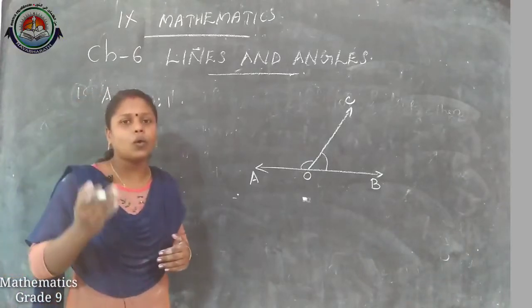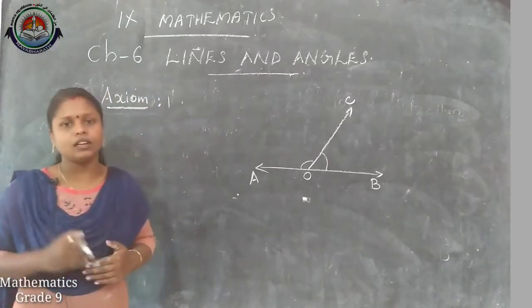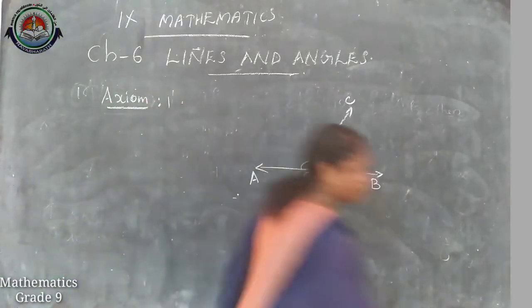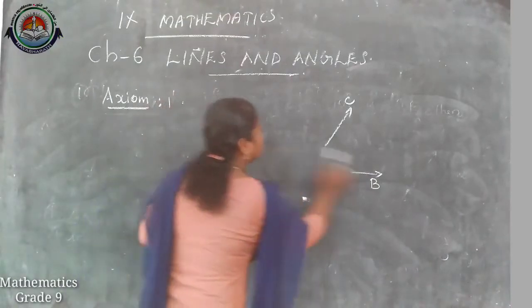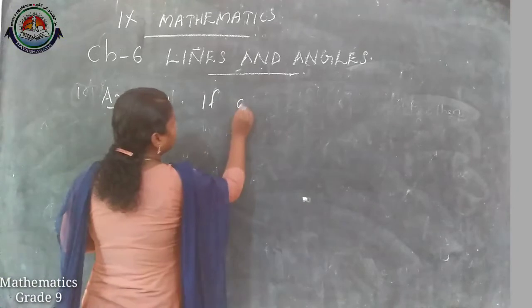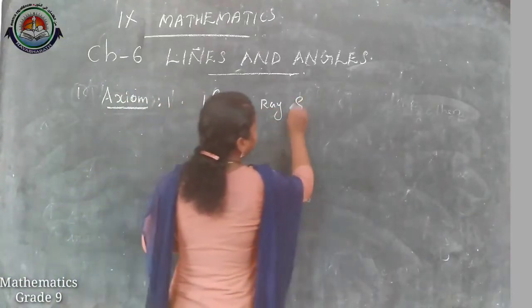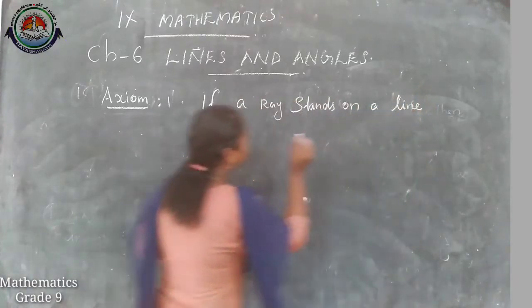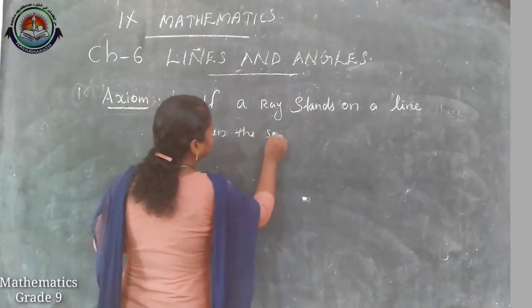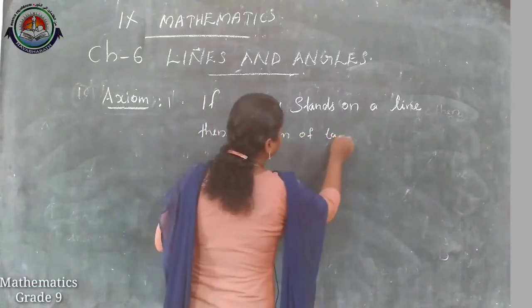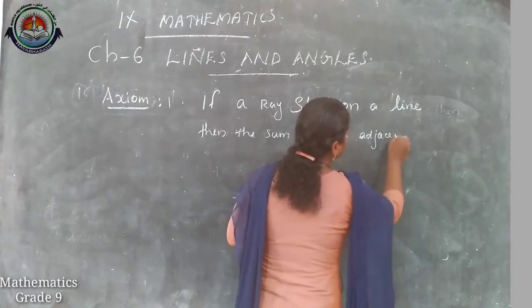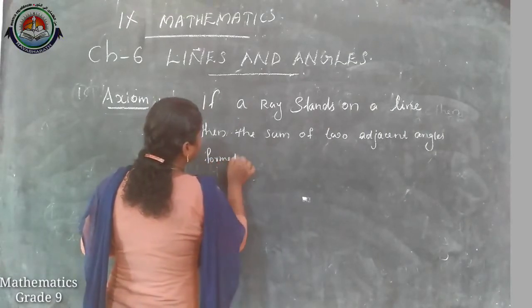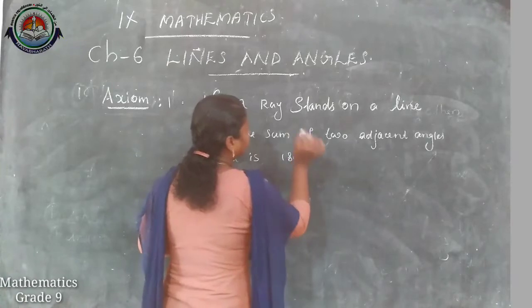If a ray stands on a line, then the sum of the two adjacent angles so formed is 180 degrees.